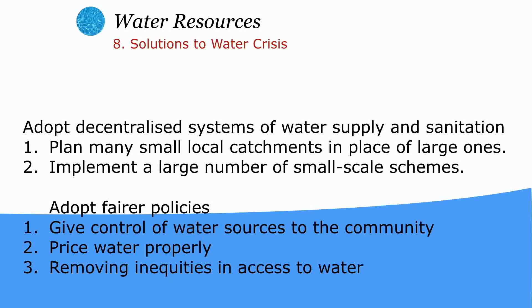There are many more ways to save water: adopting decentralized water systems for water supply and sanitation, planning many small local catchments in place of large ones, implementing a large number of small-scale schemes, adopting fairer policies, and giving control of water sources to the community.